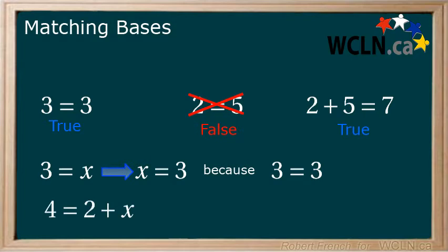4 equals 2 plus x. Again we can solve algebraically by subtracting 2 from each side to get x equals 2 or just knowing that we need x to equal 2 because 2 plus 2 equals 4. Now that we have refreshed quickly on this idea let's move on.